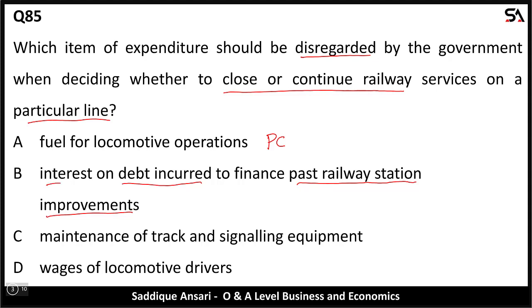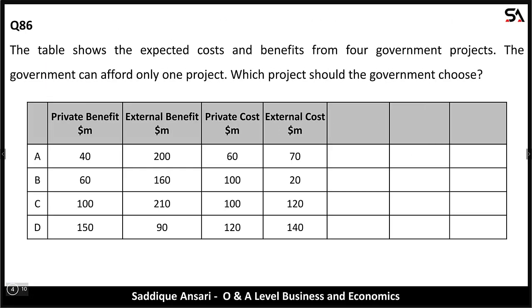The government has already taken a loan and is paying interest on it. Whether the government continues or closes the railway service, that interest will be paid in any case, so it will be excluded from the current decision. This is our correct answer — B. Option C: maintenance of track and signaling equipment — that is a private cost and must be considered. Option D: wages of locomotive drivers — also a private cost for the government and must be considered. So B is the correct answer.